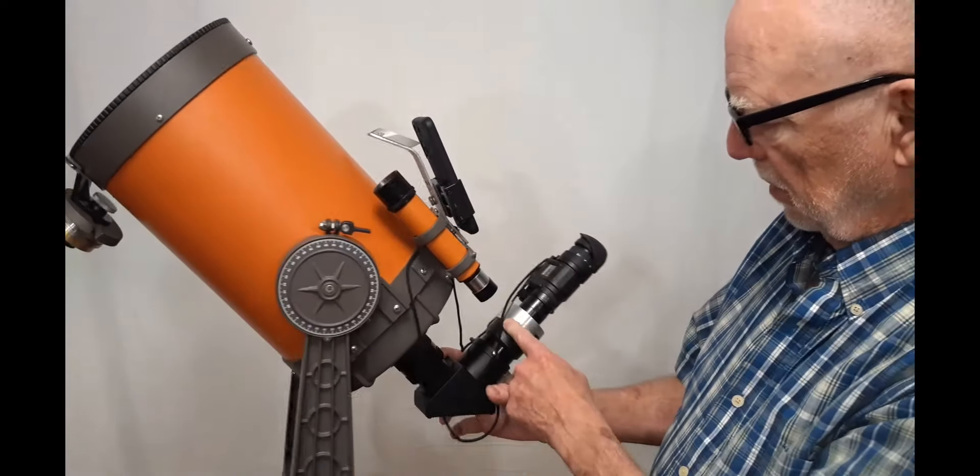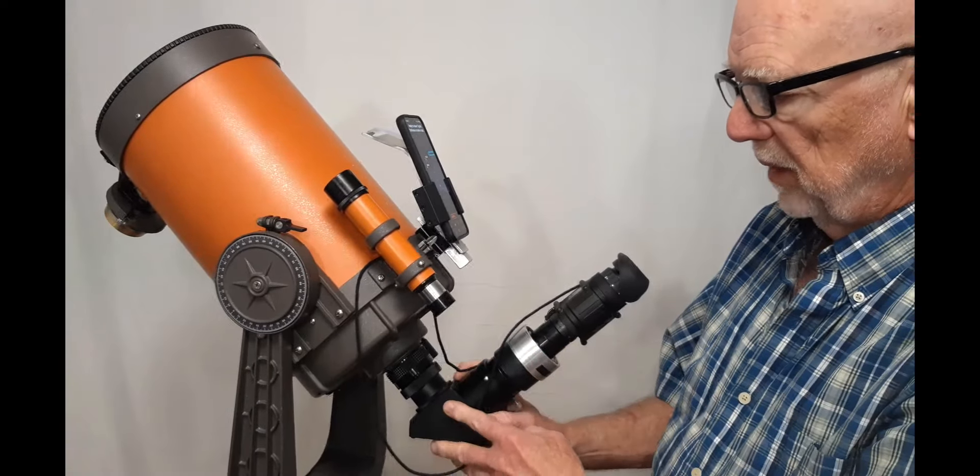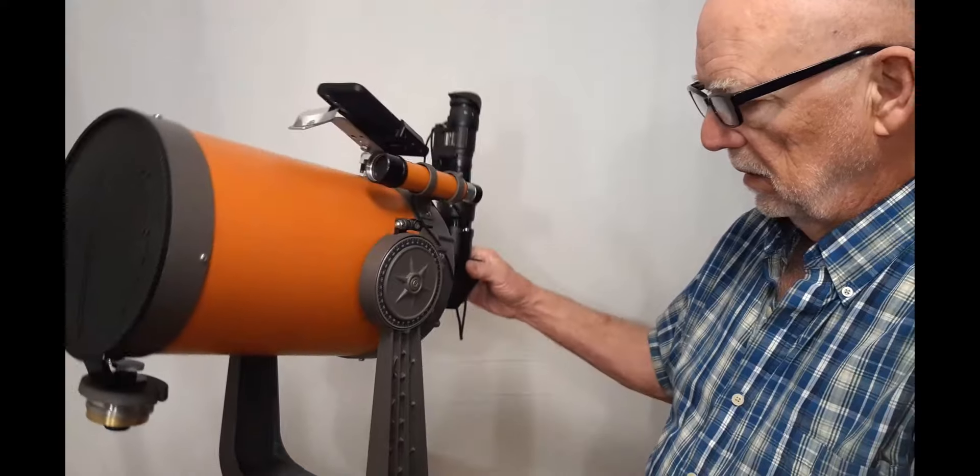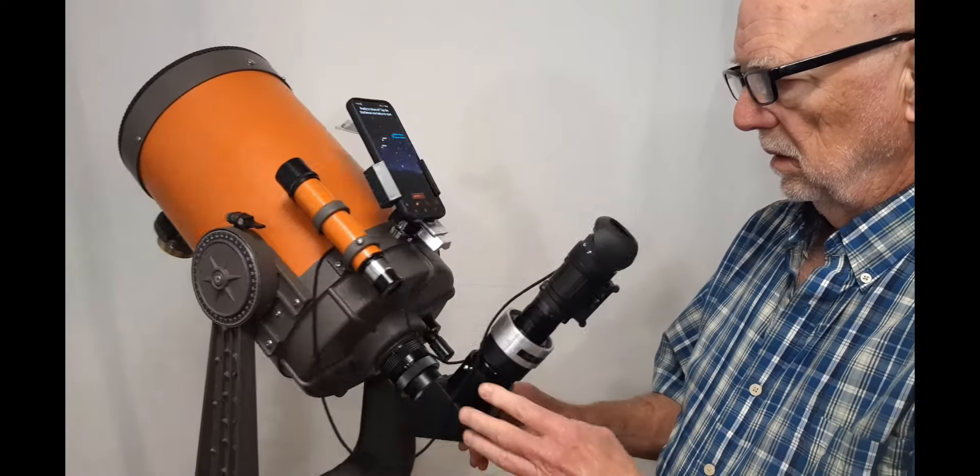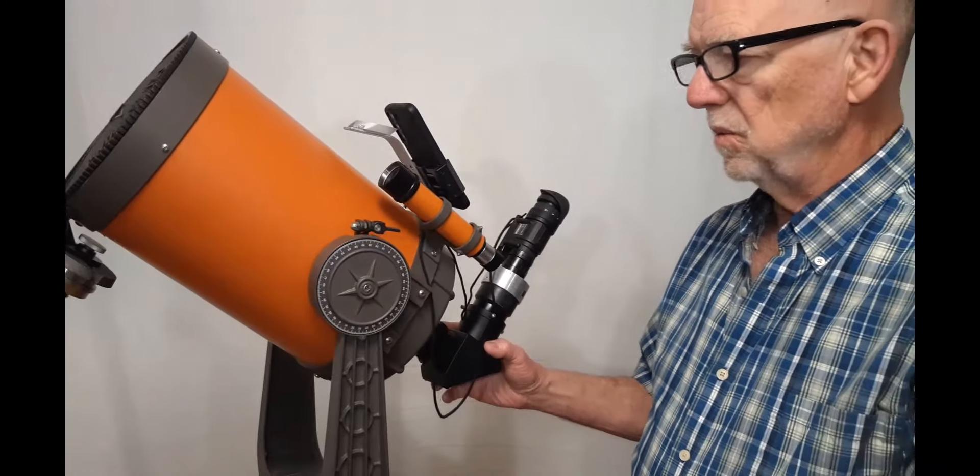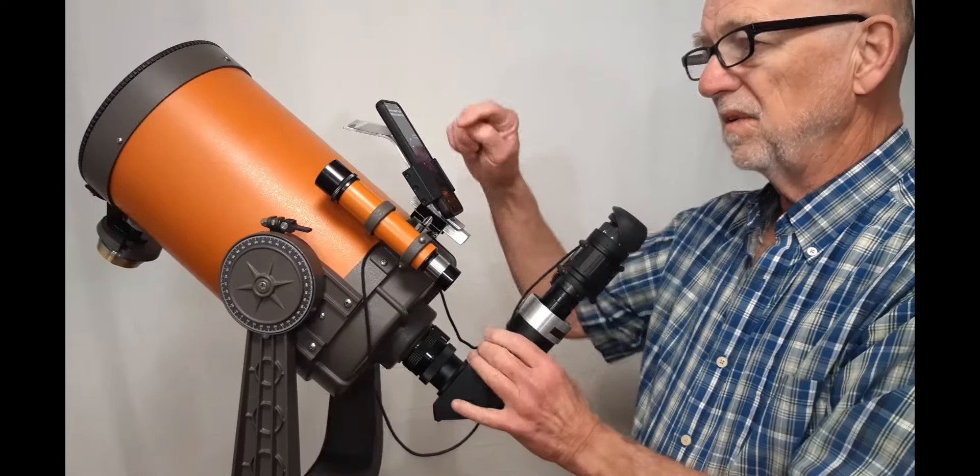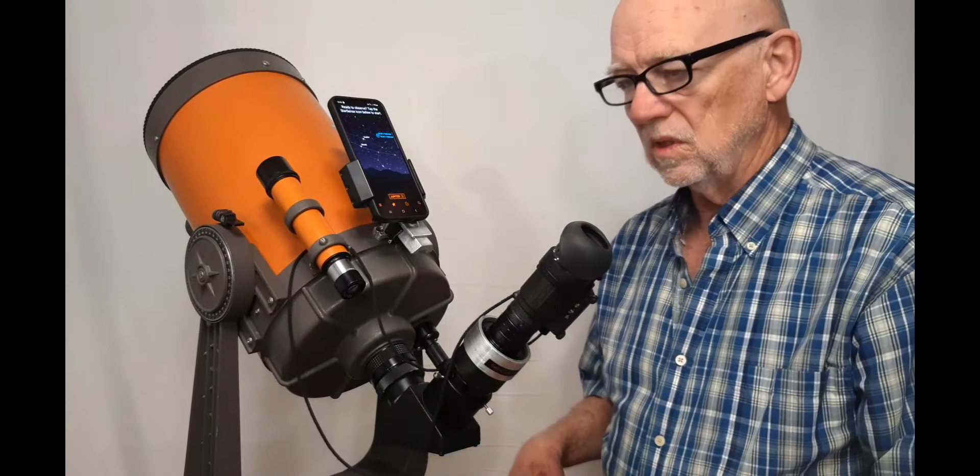Now I operate the telescope as an Altaz telescope. I need the counterweight here to counterbalance all the extra weight I've got back here. So now I've got a really nice deep sky telescope. I can find things very quickly with the StarSense app.